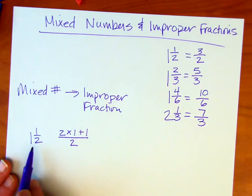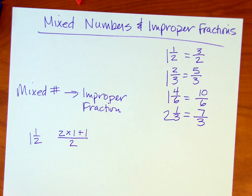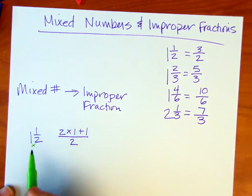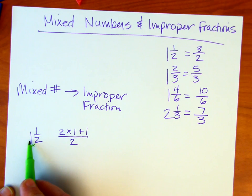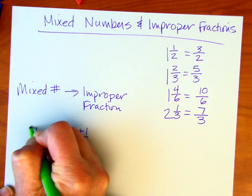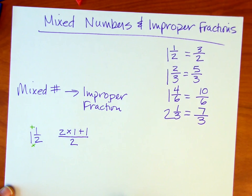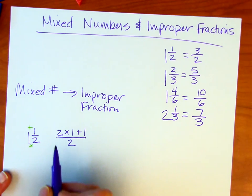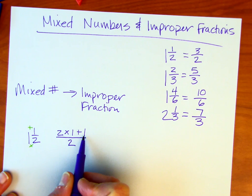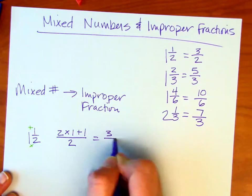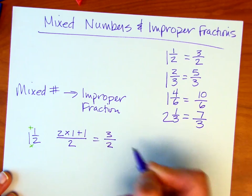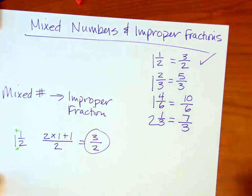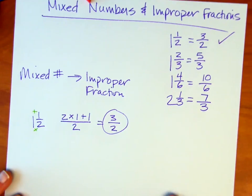See what I did there? I took, I multiplied, let me get another color, I'm multiplying the denominator to the whole number, and then I'm adding the numerator. Let's go ahead and evaluate this. Two times one is two, plus one is going to be three, and my denominator is two.